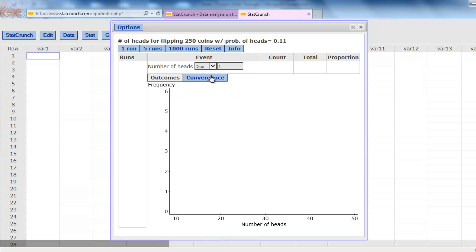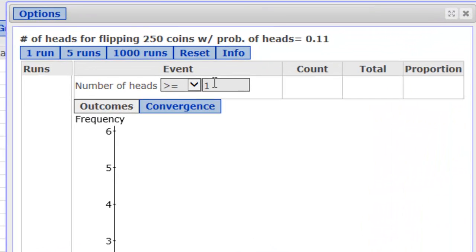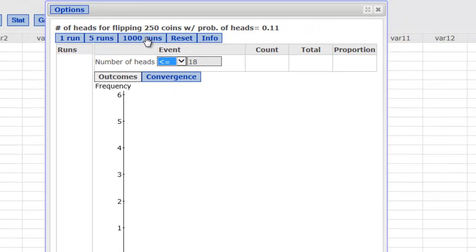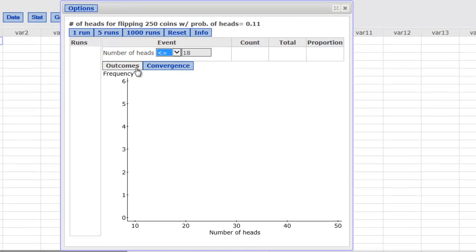Okay, we're interested in 18 or fewer, so I'm going to change the number of heads to 18, and I'm going to change that sign to be less than or equal to. Now I'm going to click on 1000 runs here at the top of the screen, and that's going to simulate flipping 250 coins 1000 different times. Here we go.